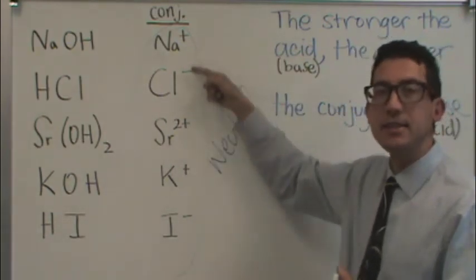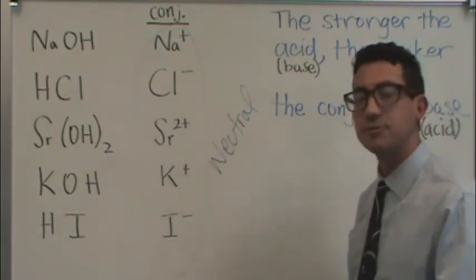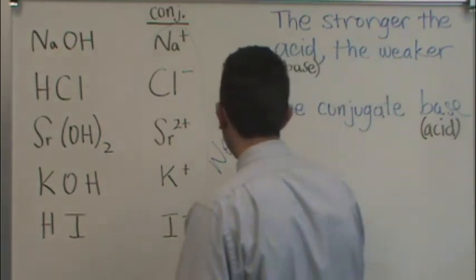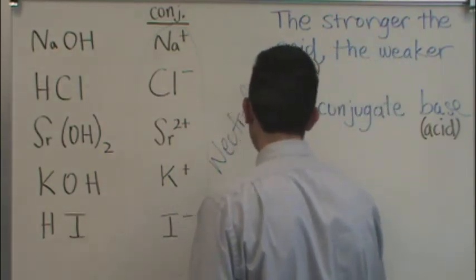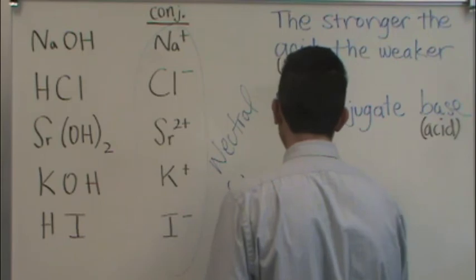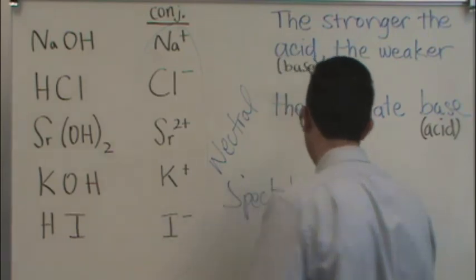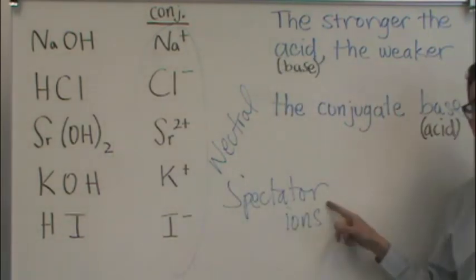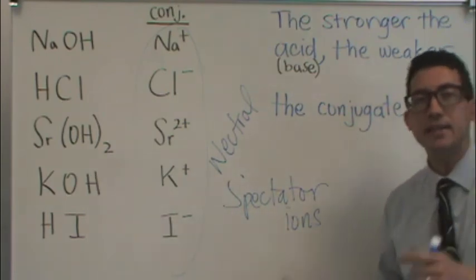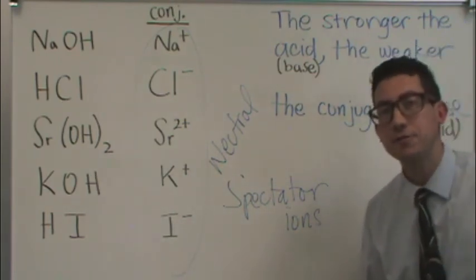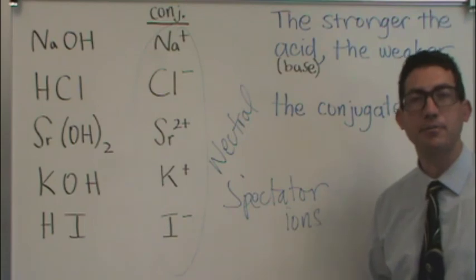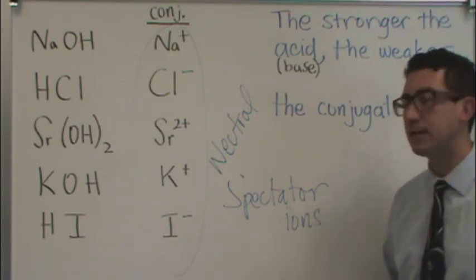You should recognize these ions from Chem 2A. What are those? These are our old spectator ions. Remember we talked about spectator ions before? A spectator ion is something that is in the reaction, but not involved in the reaction. And so we effectively cancel it out. But we didn't say much more about it.